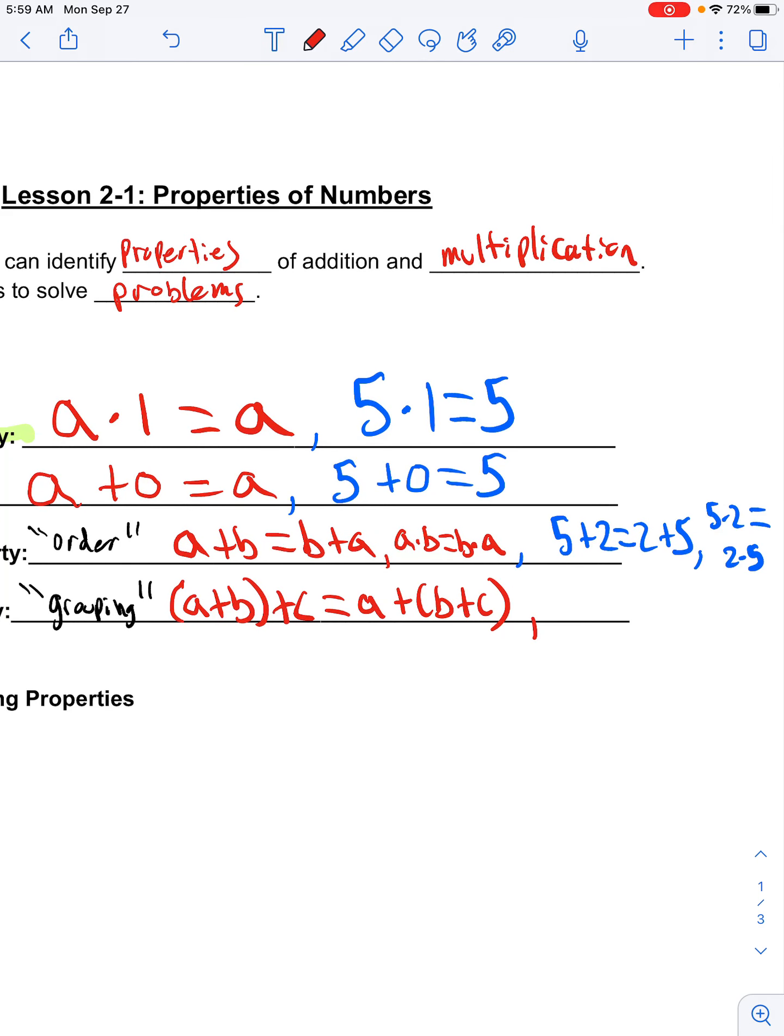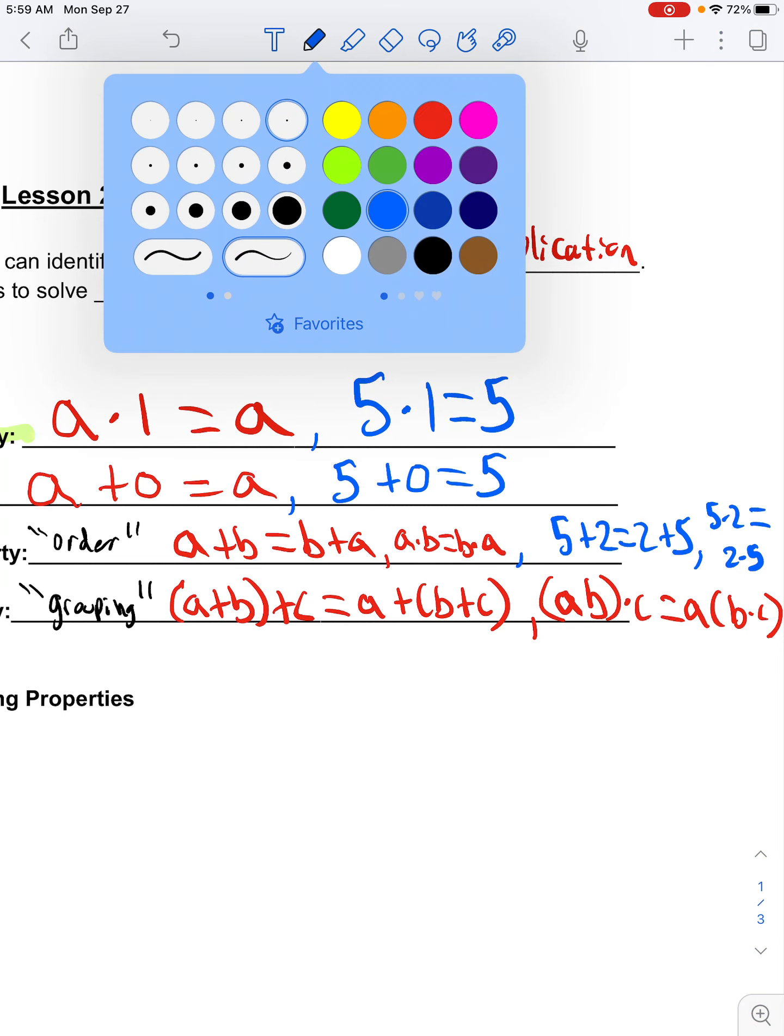Remember, this also works for multiplication. So let's say we have parentheses a times b and then multiplied by c on the outside. Well, I can also do a parentheses, parentheses b times c and get the same exact answer.